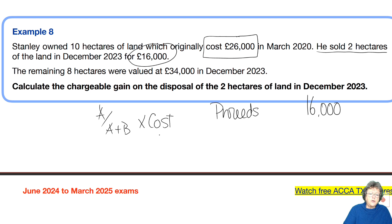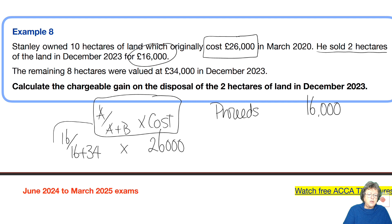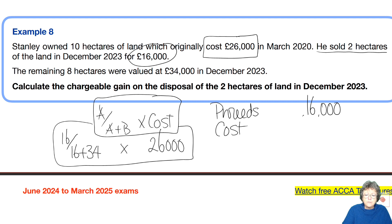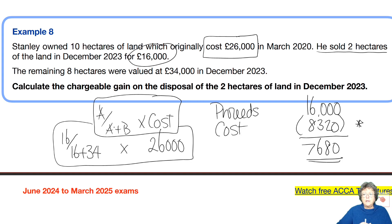The original cost was 26,000. Applying the formula: 16 over 50 times 26,000 gives an allowable cost of 8,320, resulting in a gain of 7,680. You won't get marks just for that final answer — you get marks for showing all the working on the left-hand side. That's what's really important.